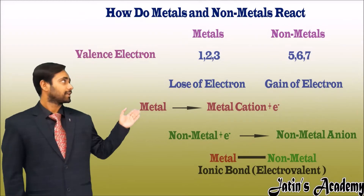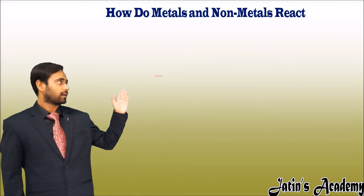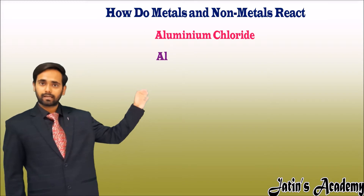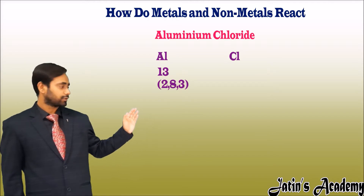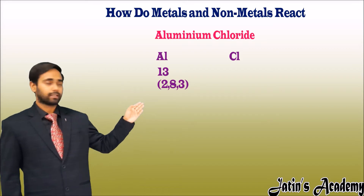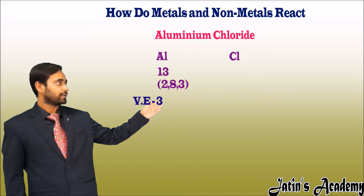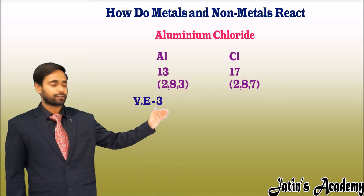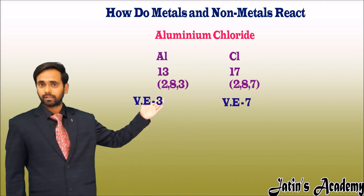Now, let's understand this ionic or electrovalent bond with an example. Let's take aluminum chloride. We know the symbol of aluminum is Al and the symbol of chlorine is Cl. The atomic number of aluminum is 13, and its electronic configuration is 2, 8, 3. This means aluminum has 3 electrons in its outermost shell — 3 valence electrons. On the other side, chlorine has atomic number 17 and electronic configuration 2, 8, 7, meaning chlorine has 7 electrons in its outermost shell.